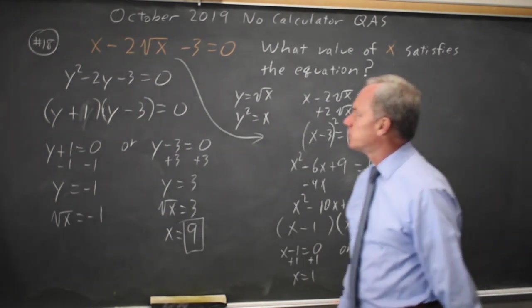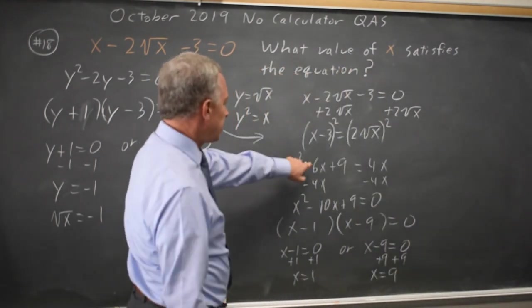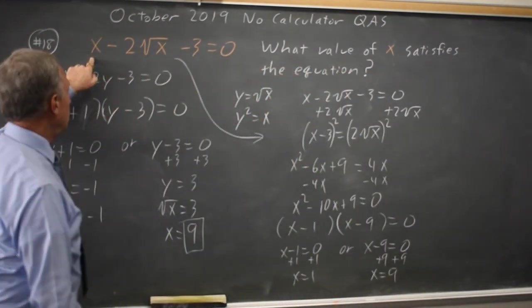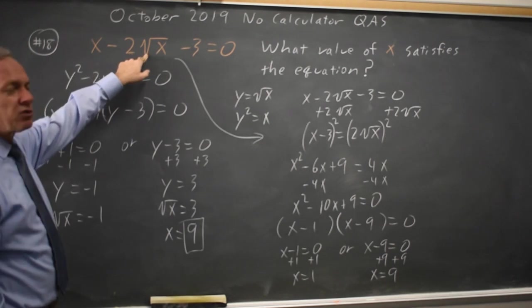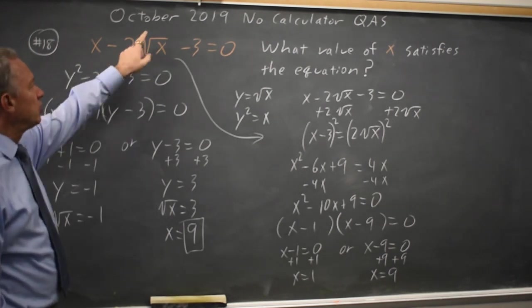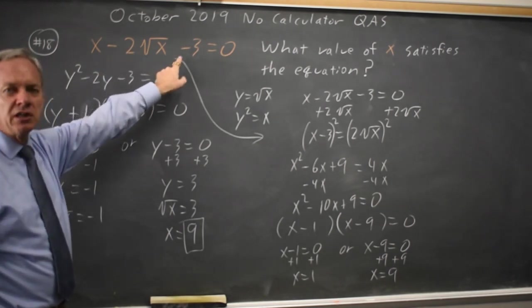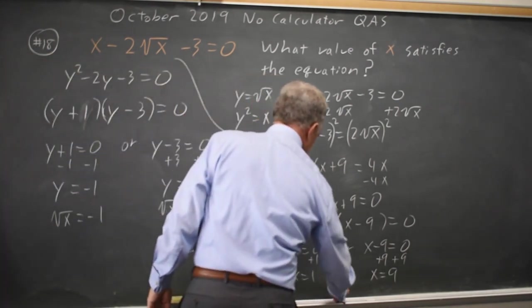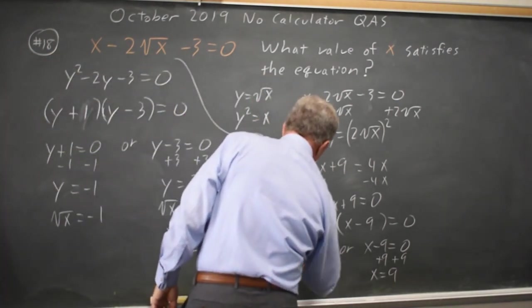Let's substitute them into the original equation. Not this one I got by squaring, but the original. 1 minus twice root 1 is 1 minus 2 is negative 1, minus 3 is negative 4. x equals positive 1 does not work. It's what we call an extraneous solution.